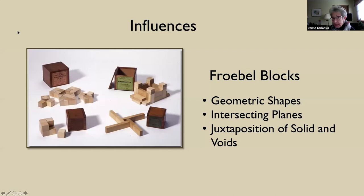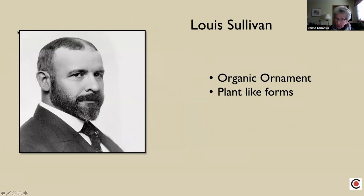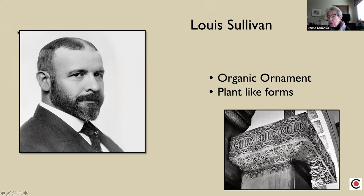Frank Lloyd Wright himself said that there were three things that influenced his designs. First, the Froebel blocks — wooden blocks from which you make shapes and forms, two or three dimensional. He learned a lot about geometry from them. He also credited Louis Sullivan, his second employer, with teaching him about organic ornament and using plant-like forms. You can see an example of Sullivan's organic forms on a column from the auditorium in downtown Chicago, now Roosevelt University.